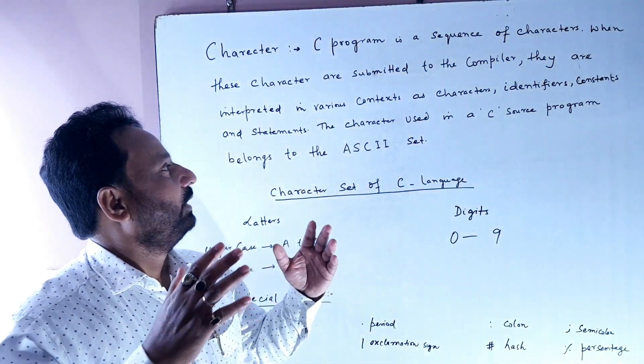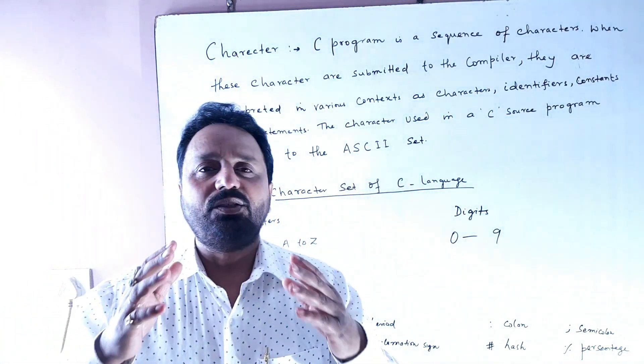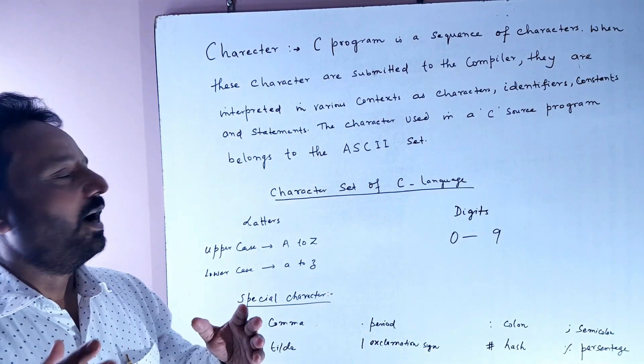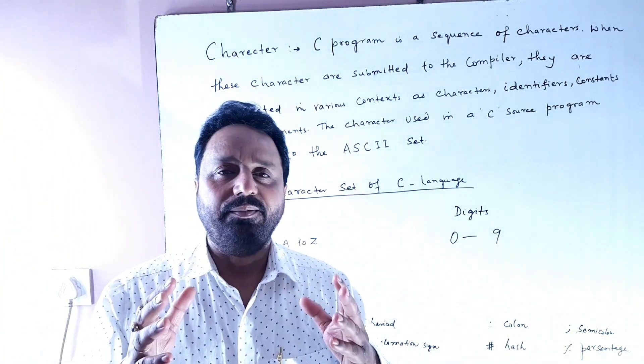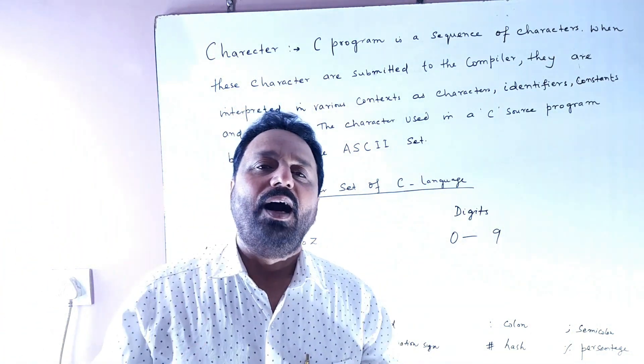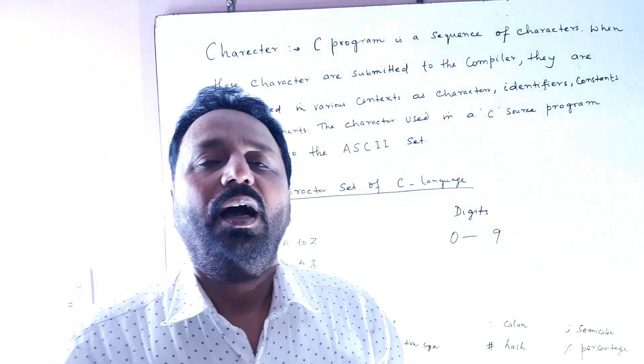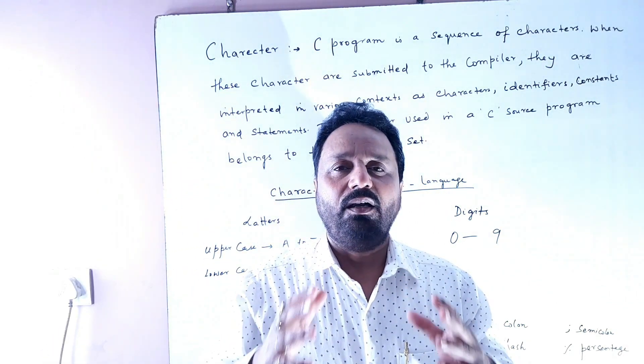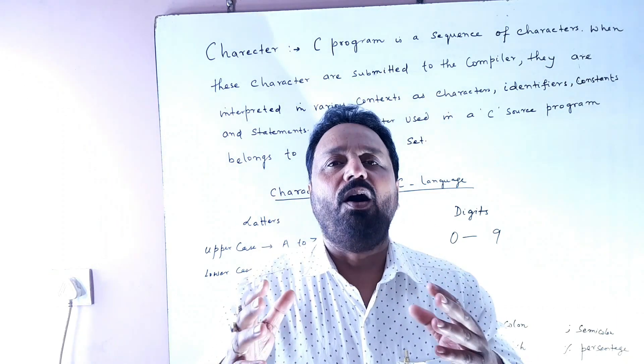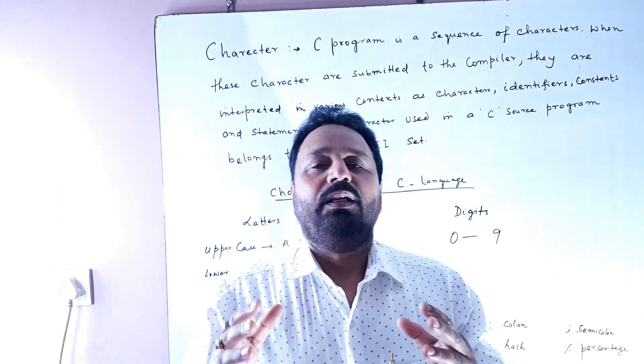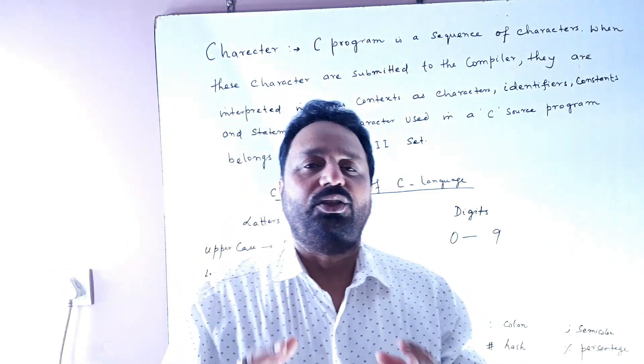The characters used in a C source program belong to ASCII. The full form of ASCII is American Standard Code for Information Interchange.